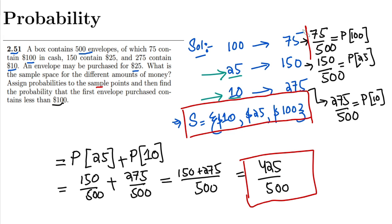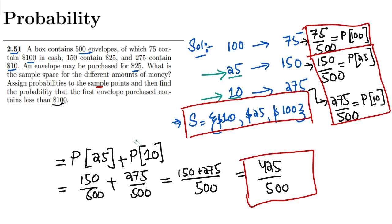So those were the different probabilities calculated. I hope the underlying concepts of this question are now clear to you guys. If you have any questions, you can ask me in the comment box. Thank you so much.